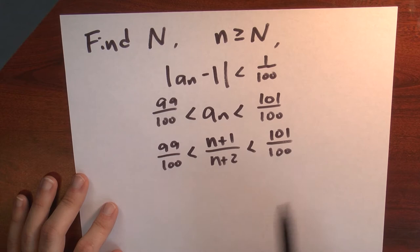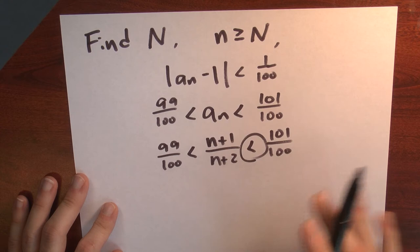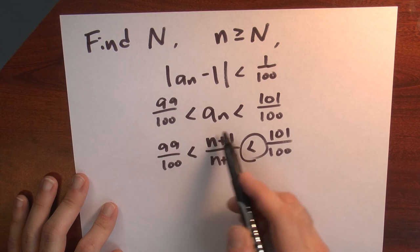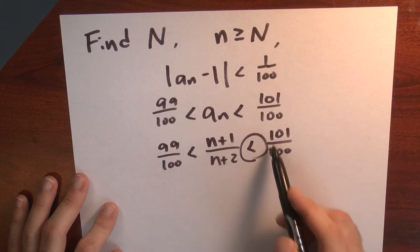Well, one of these inequalities comes for free. This inequality here comes for free, because (n+1) over (n+2) is always less than 1. The numerator here is smaller than the denominator, so this thing being less than 1, in particular this thing is less than 101 over 100. So I get this inequality for free.